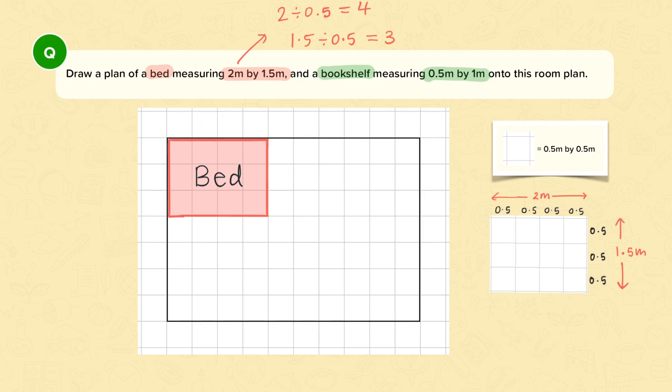So now if I want to draw the bookshelf, 0.5 meters will be 1 square and 1 meter will be worth 2 squares. So I draw a rectangle measuring 1 by 2. And again it doesn't matter where I place these in the room, I'm just asked to draw them somewhere into the plan, so I can place them anywhere as long as they are the right size.